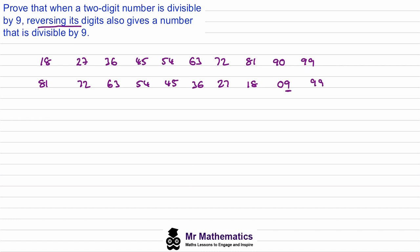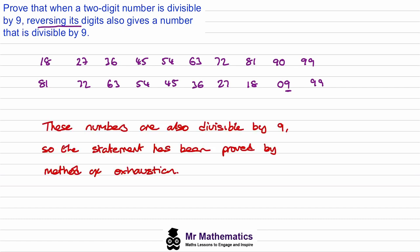All we've done is repeated the numbers in this list. So if these numbers are divisible by 9, then so are these reversed numbers. Therefore, the statement has been proved by the method of exhaustion.